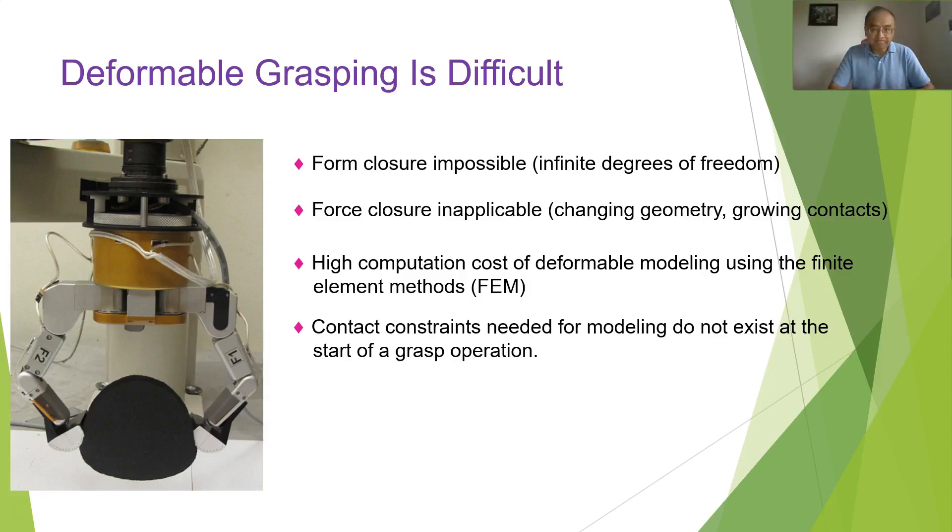Why deformable grasping? Why it's difficult? First of all, we know that there are two kinds of measures of rigid body grasping. One is form closure, which says that all the degrees of freedom of the object has been prohibited. The other one is force closure, which measures the grasp ability to resist any force and torque exerted externally.